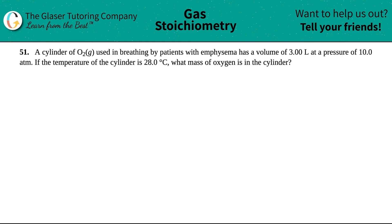Number 51. A cylinder of oxygen gas, which is O2 gas, is used in breathing by patients with emphysema, has a volume of 3.00 liters and a pressure of 10.0 atm. If the temperature of the cylinder is 28.0 degrees Celsius, what mass of oxygen is in the cylinder?